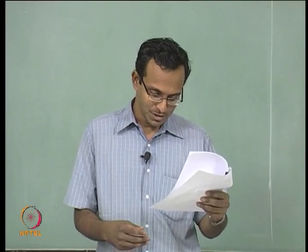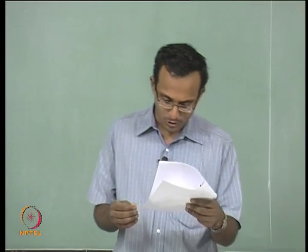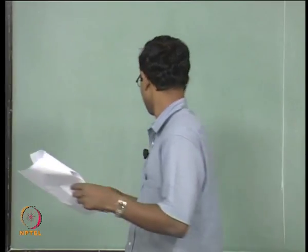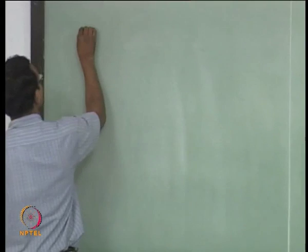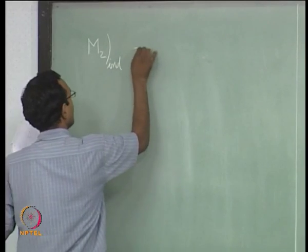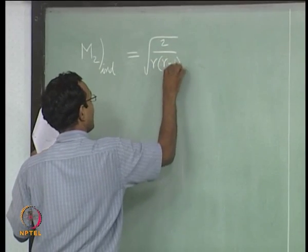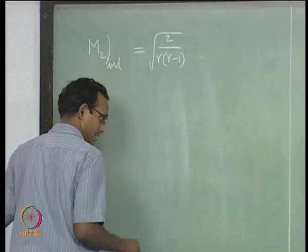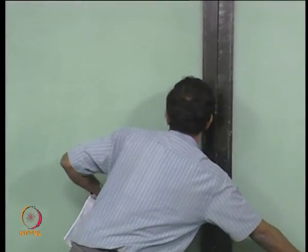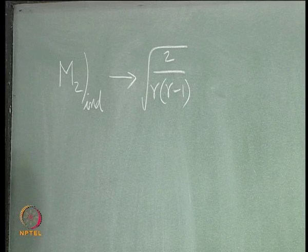It can be 0, which is very low subsonic — ideally 0 if it is a very weak compression wave — and if it is a strong enough wave it goes to a maximum value. I will keep writing it as M2 induced by the shock, given by √(2 / (γ(γ−1))), which we derived last class. This is the highest value, the asymptote it will reach finally.